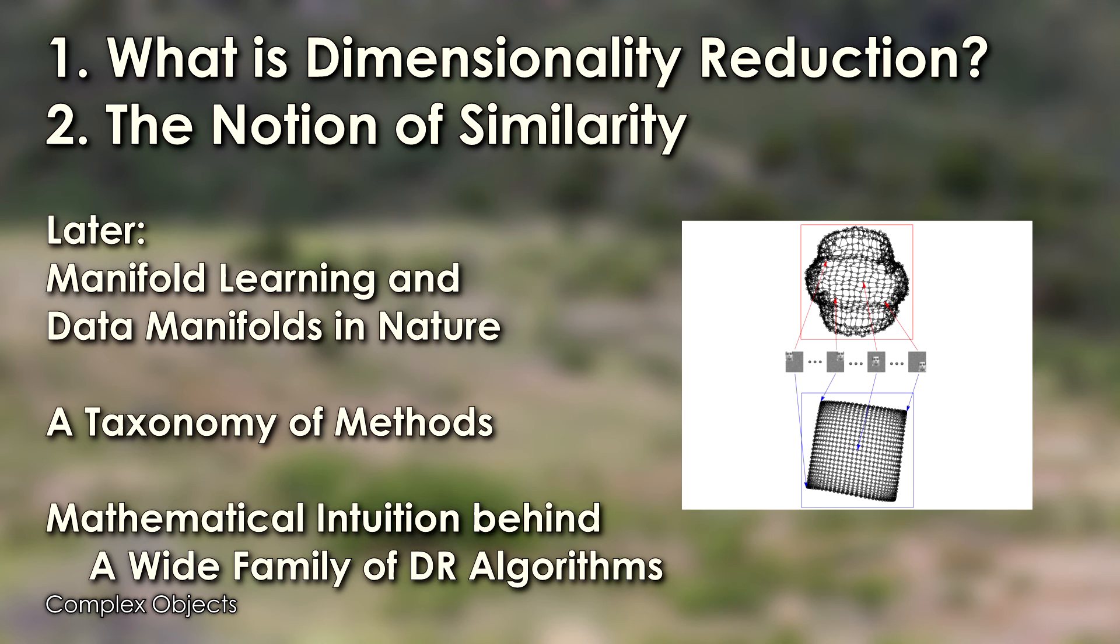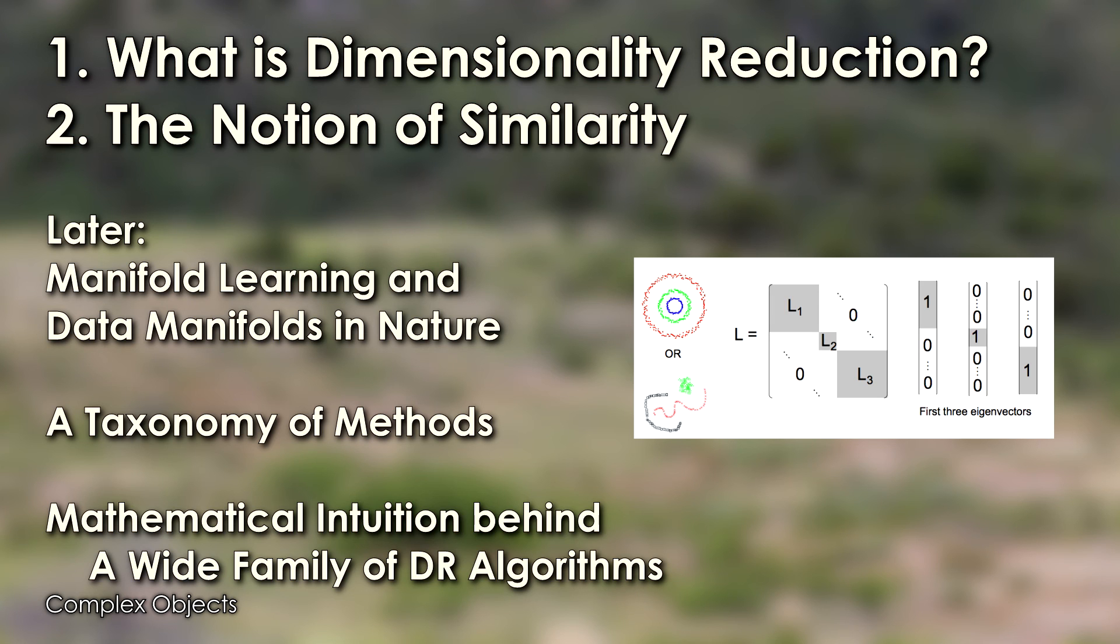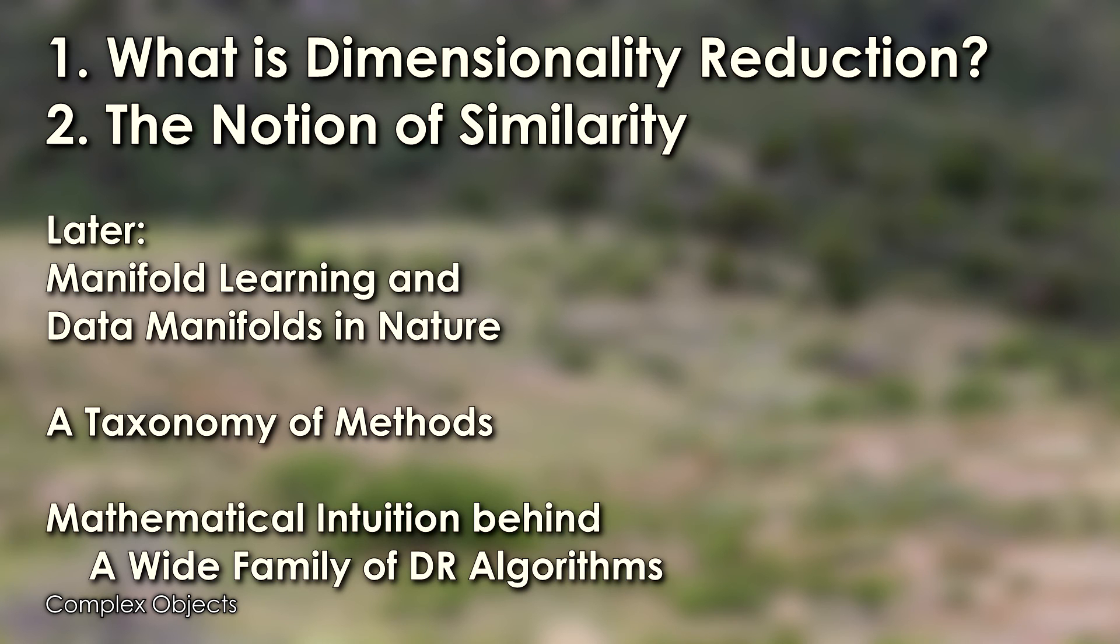I'm going to try to classify different dimensionality reduction methods based on how they reduce the dimensionality, and I'm going to give an intuition behind the main step of a very wide family of dimensionality reduction algorithms. It's basically one mathematical step, but it took me a while to figure out a solid intuition for that step, so I think it's really important to present that.